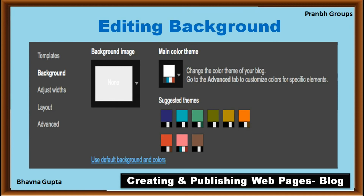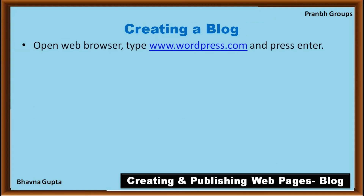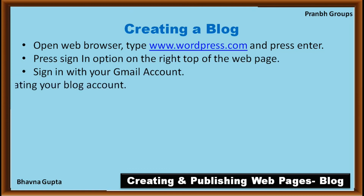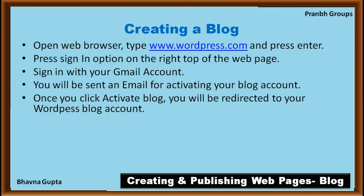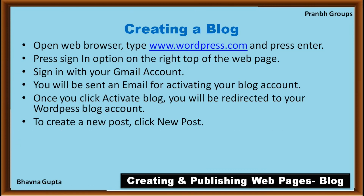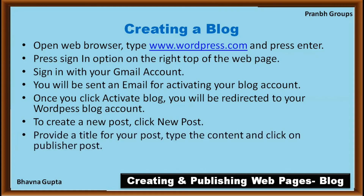This completes the process of creating a blog using blogger.com. Next topic: Creating a blog using wordpress.com. Open a browser and type www.wordpress.com, then press Enter. Sign in with your Gmail account and activate your WordPress blog account. To create a new post, click the 'New Post' button, provide a title for your post, type the content, and then click 'Publish Post'.